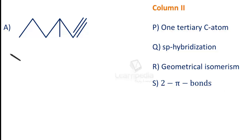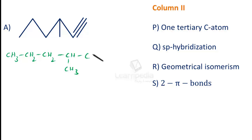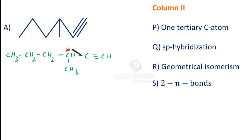This is the first compound (A). When we extend and write it out, it is: CH3-CH2-CH2-CH(CH3)-C≡CH. A tertiary carbon is one which is attached to three other carbons. This particular carbon is a tertiary carbon because it is attached to three other carbons, so property P is satisfied.